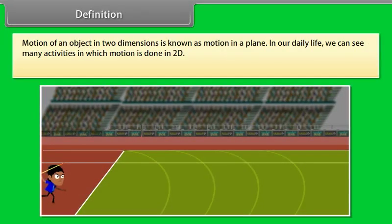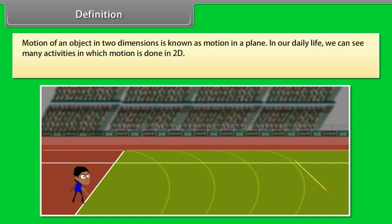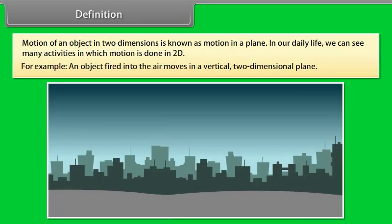Motion of an object in two dimensions is known as motion in a plane. In our daily life, we can see many activities in which motion is done in two dimensions. For example, an object fired into the air moves in a vertical two-dimensional plane.